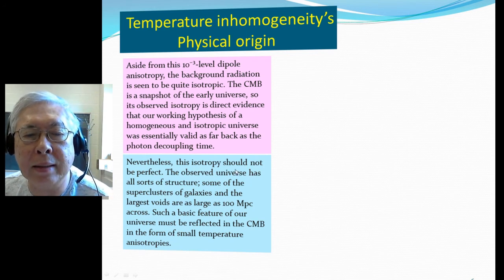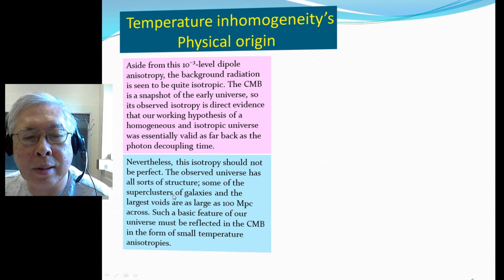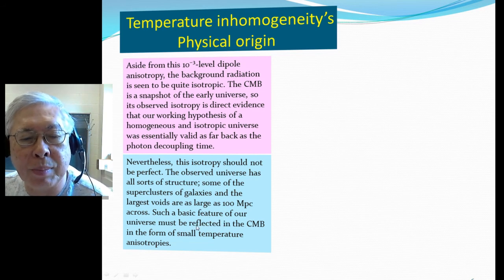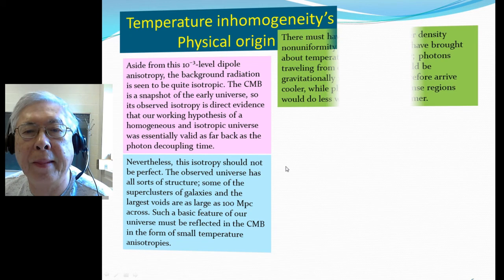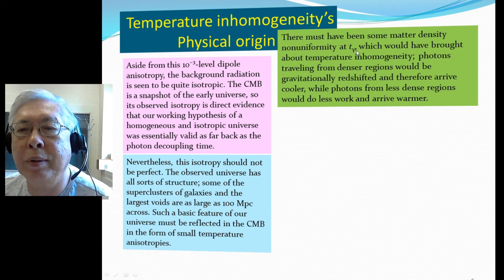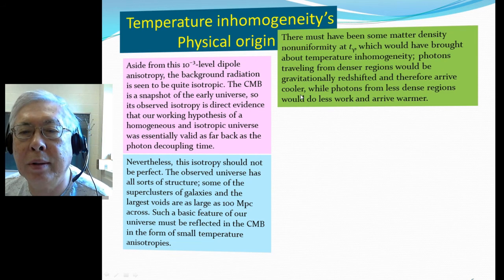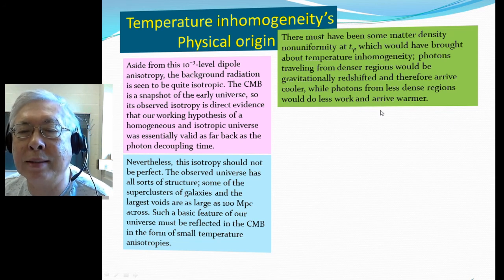Nevertheless, the isotropy should not be perfect, because the observed universe has all sorts of structures — some superclusters, galaxies, and large voids as large as 100 megaparsecs across. Such basic features of our universe must be reflected in the CMB in the form of smooth temperature anisotropy. There must be some sort of matter density non-uniformity at the time of photon decoupling, which would have brought about the temperature inhomogeneity. Photons traveling from denser regions will be gravitationally redshifted and arrive cooler, while photons from less dense regions do less work and arrive warmer, resulting in slight temperature unevenness.